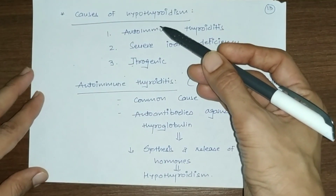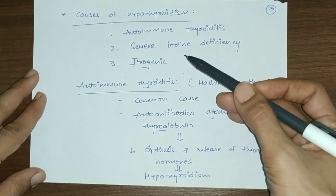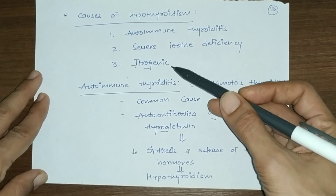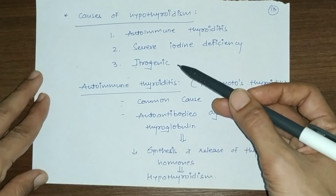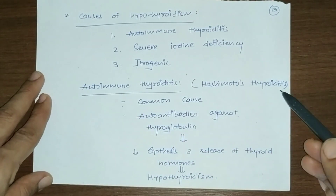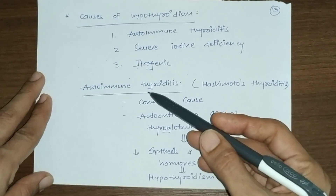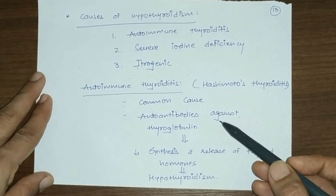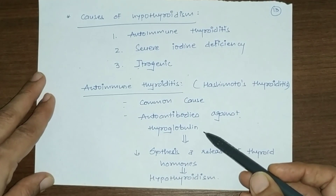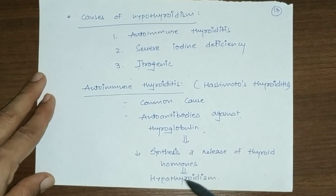The commonest causes of hypothyroidism are autoimmune thyroiditis, severe iodine deficiency (endemic goiter), and iatrogenic causes after surgery or intervention. Hashimoto thyroiditis is an autoimmune disease where autoantibodies are produced against thyroglobulin, leading to decreased synthesis and release of thyroid hormones, resulting in hypothyroidism.